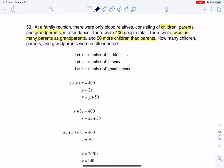They told us that the total was 400, so that's where that first equation is coming from. It says there were twice as many parents as grandparents, so that means for however many grandparents we had, if we double that number, we get up to parents.